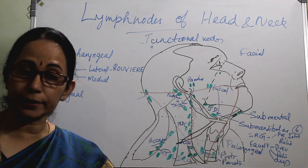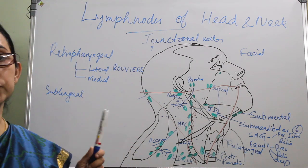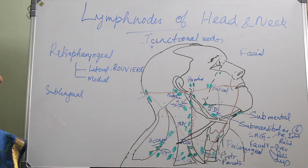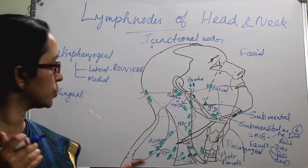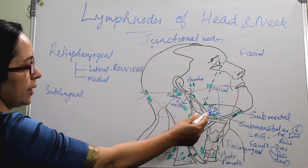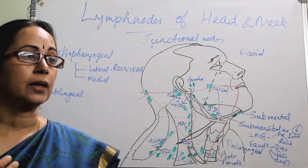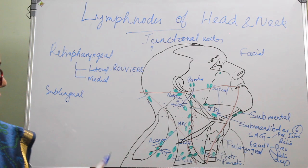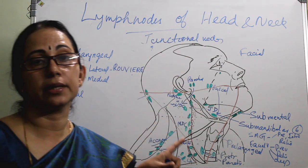Two groups of lymph nodes that are not clinically palpable are the retropharyngeal and the sublingual. The retropharyngeal is divided into a lateral group and a medial group. The most superior node of the lateral group is the node of Rouvière. Both groups drain into the upper deep cervical. The retropharyngeal group mainly receives drainage from the nose, paranasal sinuses, nasopharynx, and the upper posterior wall of the pharynx.